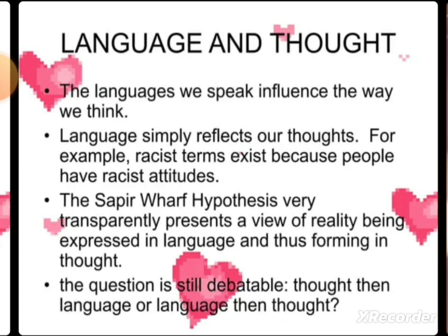According to this theory, the language we speak influences the way we think. Language simply reflects our thoughts. For example, racist terms exist because people have racist attitudes. Nations that are more racist have more racist terminologies — more racist words to assign to different categories which they consider lesser. The Sapir-Whorf hypothesis very transparently presents a view of reality being expressed in language and thus forming thought.